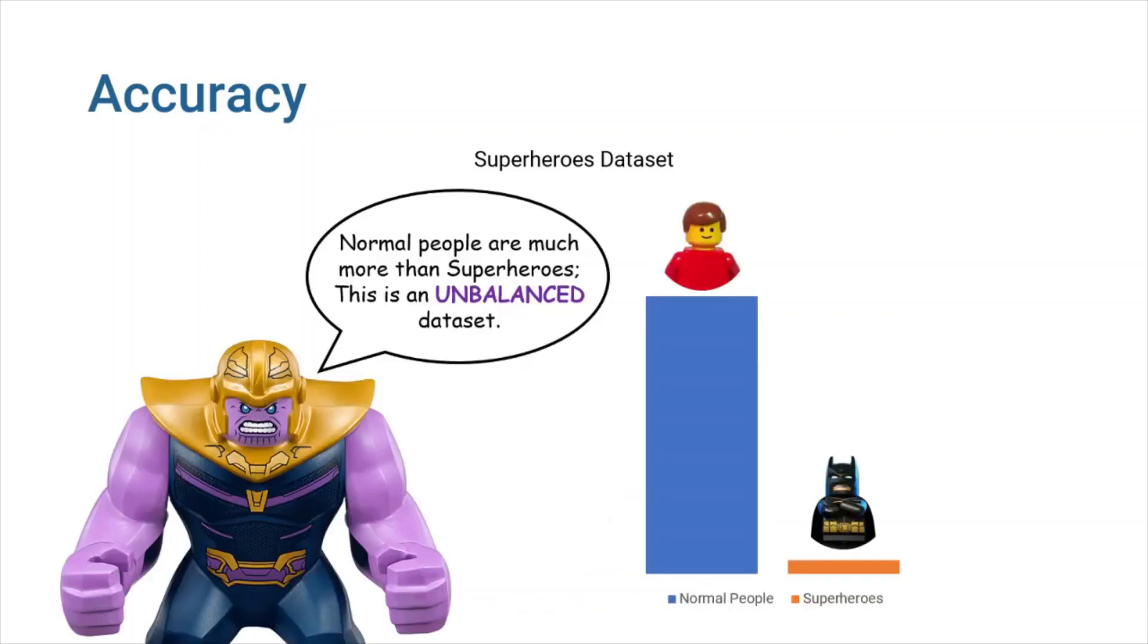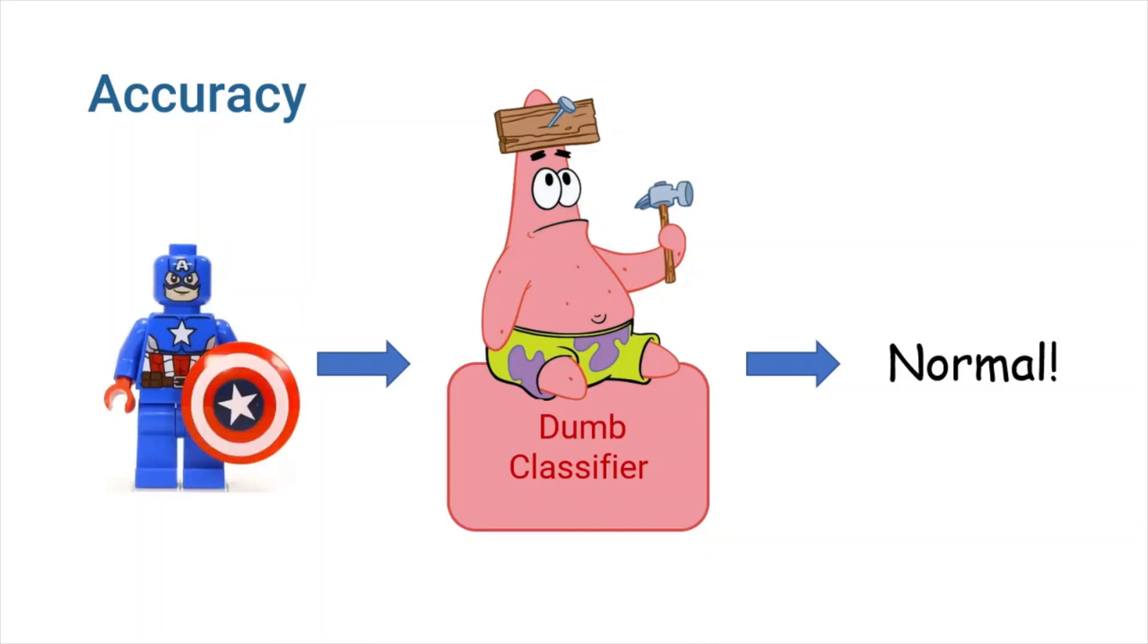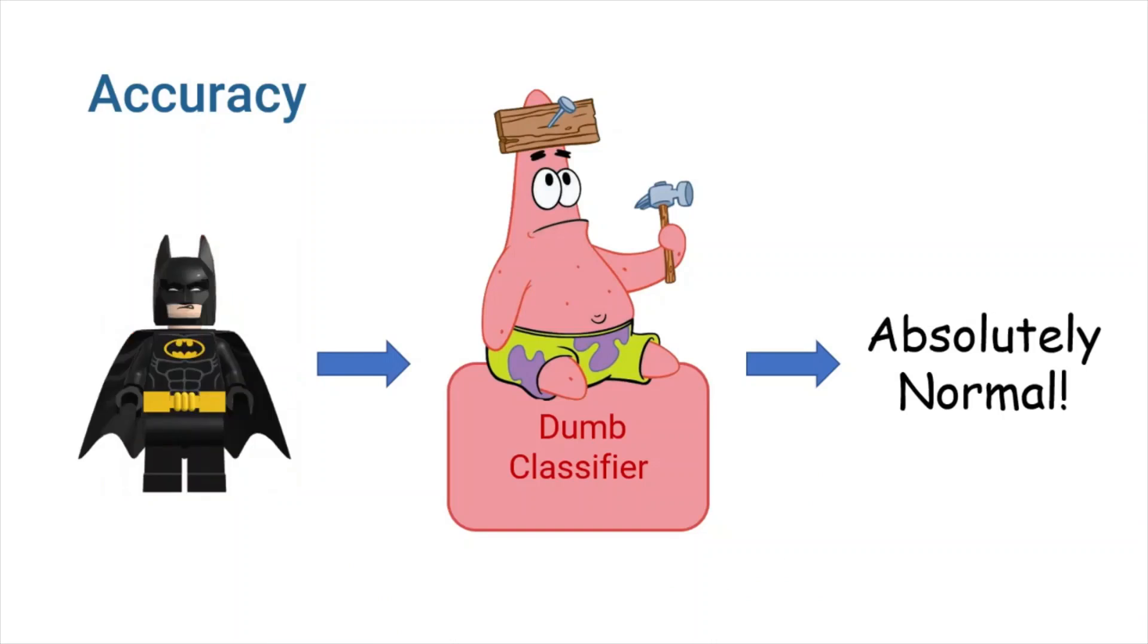This dataset is actually unbalanced. Unbalanced datasets are those in which the target variable contains more observations in one class than the others. You could make a dumb classifier that would label almost every person as normal, even those who are obviously superheroes.